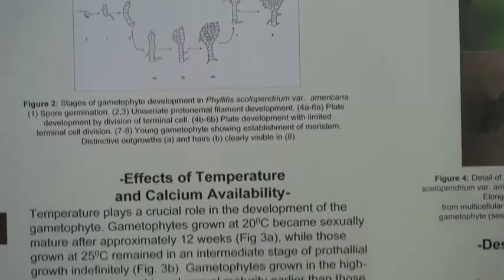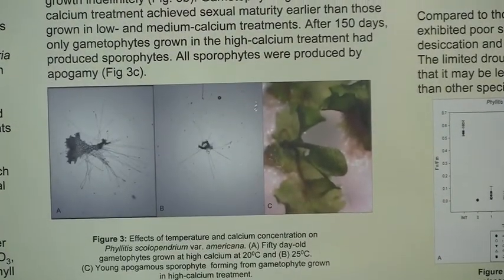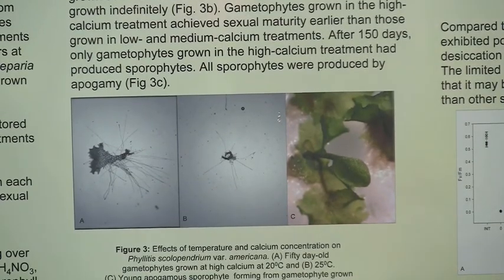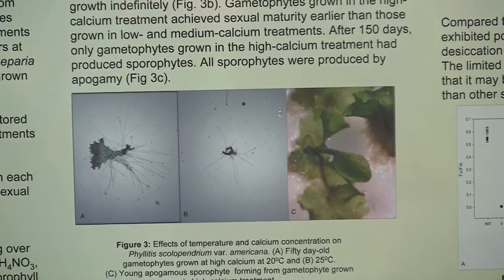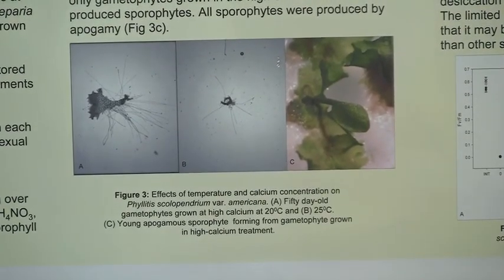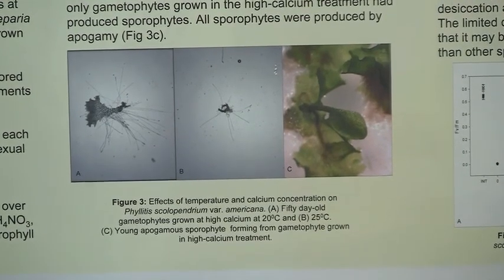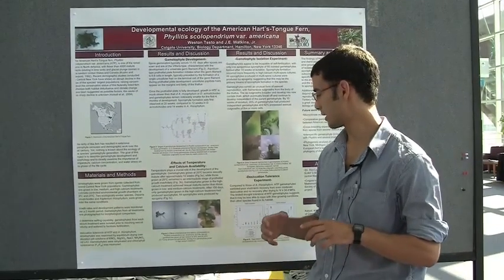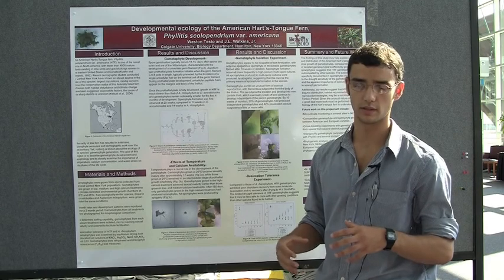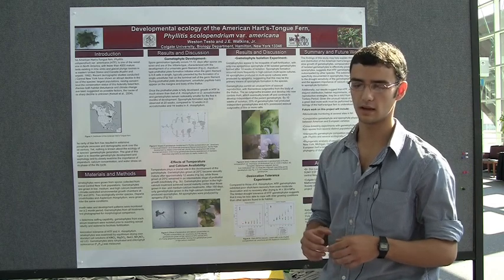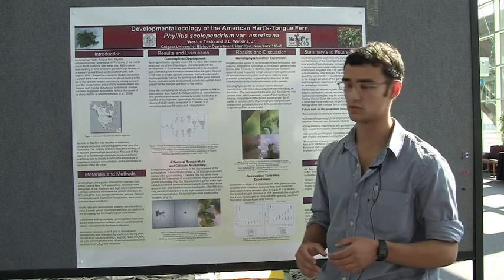The effects of temperature and calcium were actually very significant. The ferns I grew at 25 degrees Celsius did not develop to maturity — they stopped at about a 12 to 20-cell stage of development and remained there for months on end. Calcium seemed to affect the sexual maturity of the gametophytes. Those grown at high calcium became sexually mature earlier, and only the plants grown in the high calcium treatment produced sporophytes. Those in the low and medium calcium treatments continued in a gametophyte stage and appeared that they would never produce sporophytes.